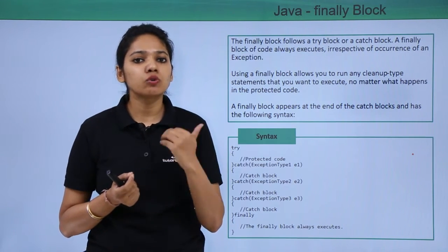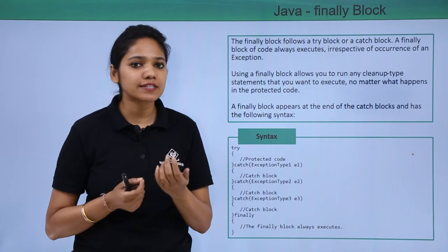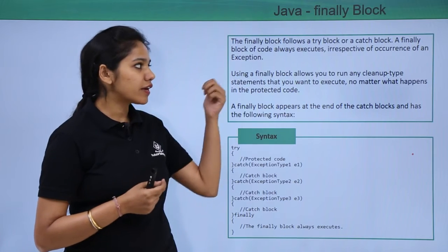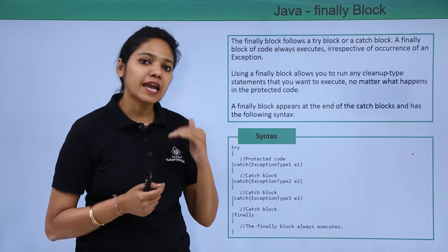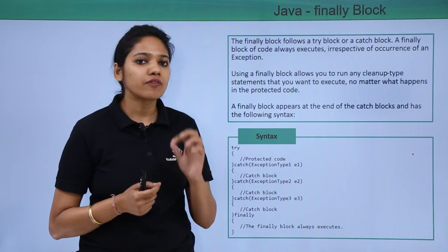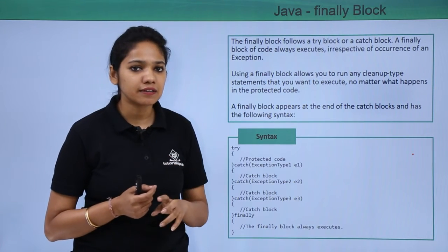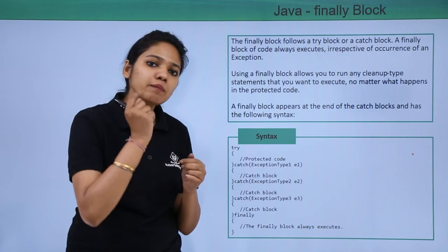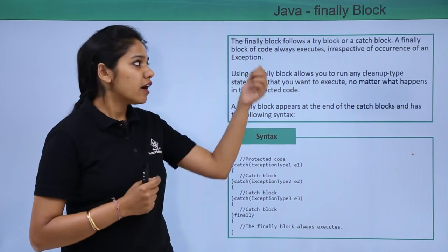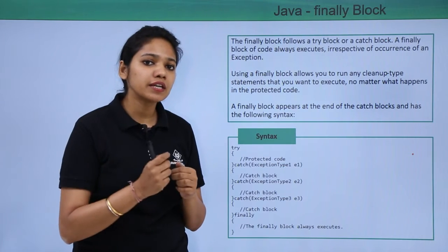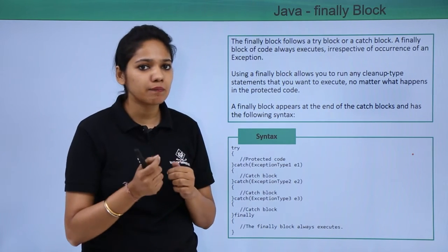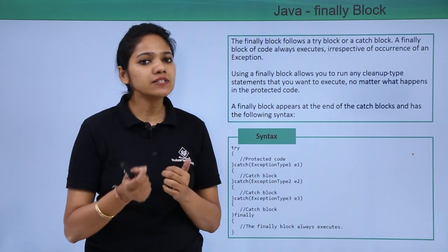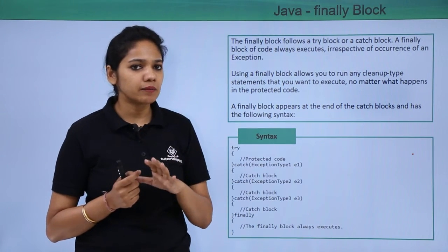If there is any leakage — like if you want to close a connection or file streams — then you use the finally keyword. The finally block will execute whether a catch statement occurs or not. Whether an exception occurs or not, the finally block will get executed. A finally block must be written with at least one try block; if there is no try block, you cannot write a finally block.